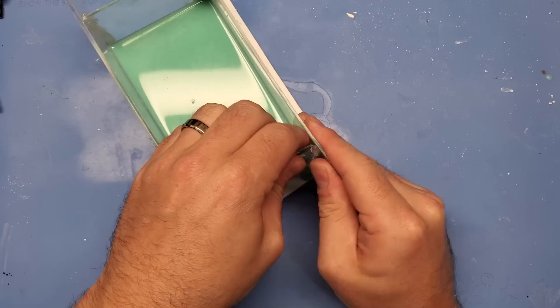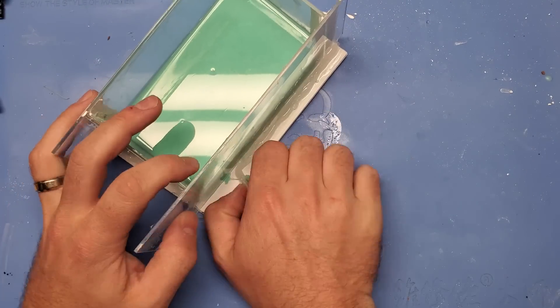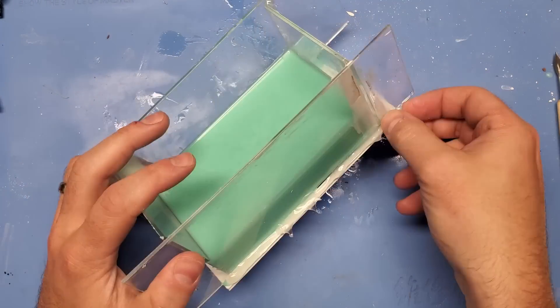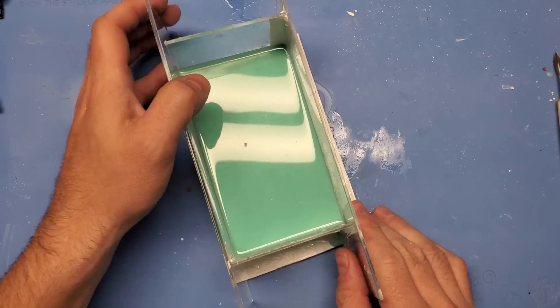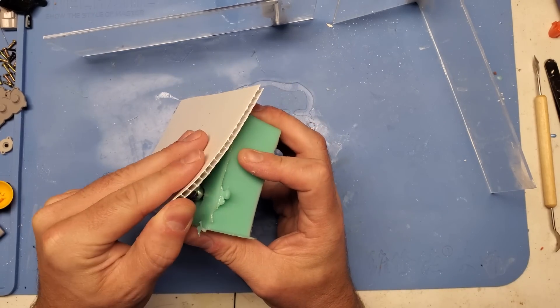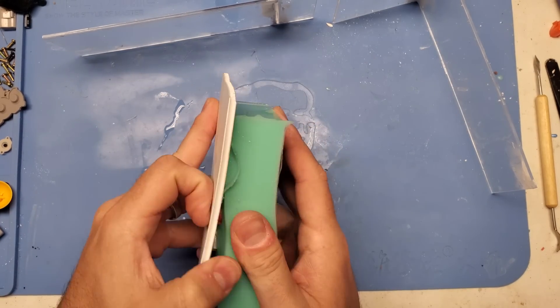After about 6 hours, it's finally time to go ahead and demold this thing, so let's rip this bad boy open, get those buttons out, and start to prep for the second half of the mold by cleaning everything up and spraying some mold release.